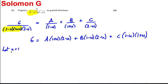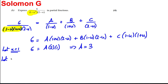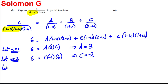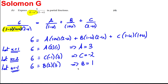Let u = 1: the B and C terms disappear, giving 6 = A times 2 times 1 = 2A, so A = 3. Let u = 2: the A and B terms disappear, giving 6 = C(1−2)(1+2) = −3C, so C = −2. Let u = −1: the A and C terms disappear, giving 6 = B(1−(−1))(2−(−1)) = B times 2 times 3 = 6B, so B = 1.